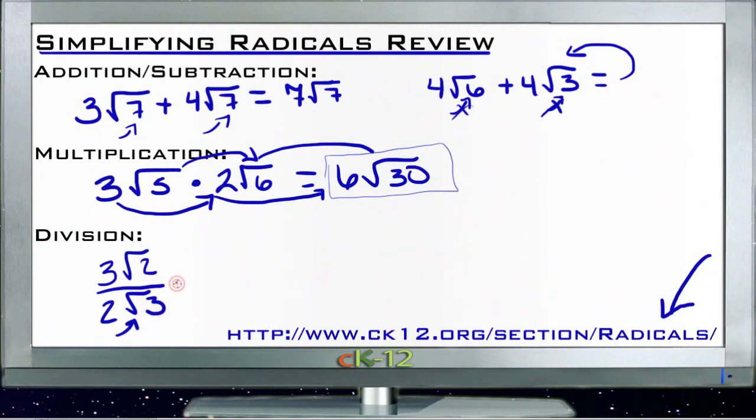To do that, we multiply top and bottom of the fraction by that same root. If I multiply this whole fraction by root three over root three, I'm essentially multiplying it by one—anything divided by itself is one—so I'm not going to change the value of the fraction at all.